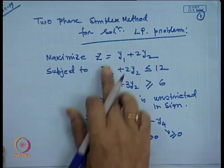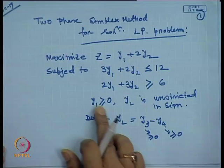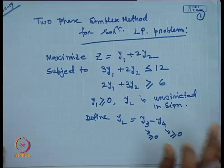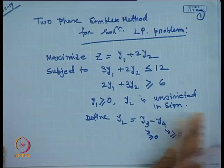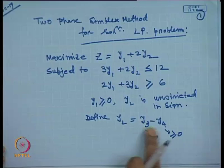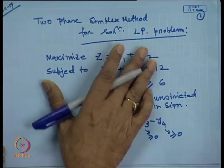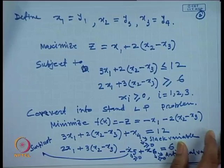Last class we discussed how to solve LP problems using the two-phase simplex method. We took an example: maximize a function subject to constraints where y1 is greater than or equal to 0 (non-negative) and y2 is unrestricted in sign. We needed to convert this into a standard LP problem.